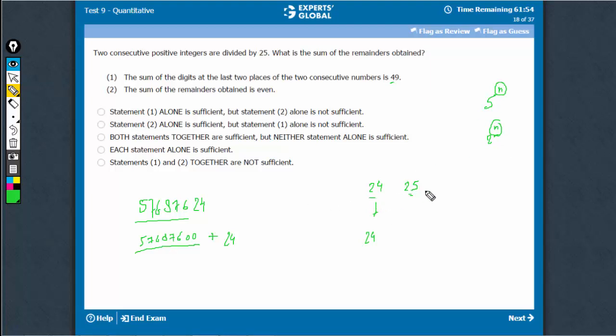So the last two digits are 24 and 25. This will lead to a remainder of 0, this will lead to a remainder of 24. Effectively, the sum of remainders would be 24.